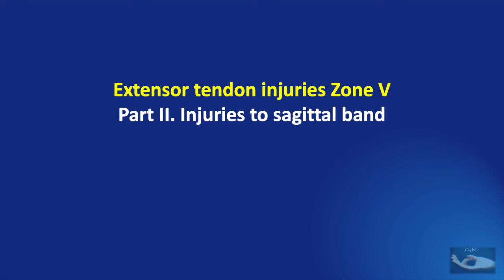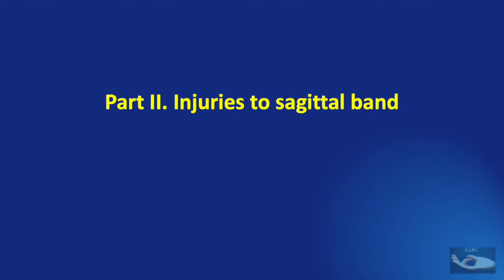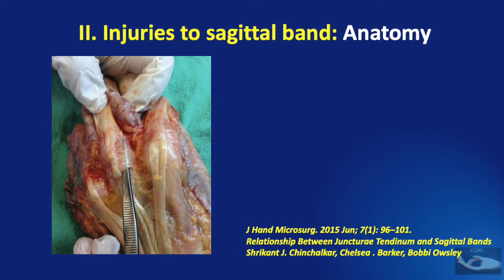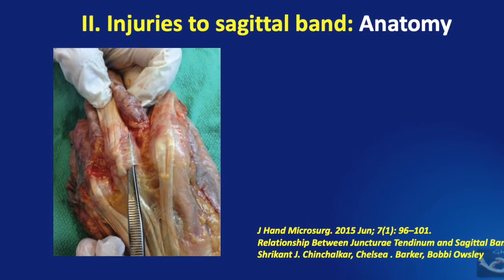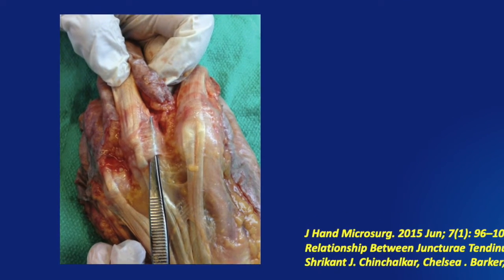We have already discussed injuries to the extensor tendon per se in zone 5; you can click on the icon above to see that video. In this video we shall be discussing the injuries to the sagittal band, which are as important as injuries to the extensor tendon. The sagittal bands arise from the volar plate of the metacarpophalangeal joint and the deep transverse metacarpal ligament, run dorsally on either side of the metacarpophalangeal joint, and encompass the extensor tendon on the dorsal aspect. Though present on both the radial and ulnar side, the sagittal band on the radial side is much thicker than the ulnar side sagittal band.